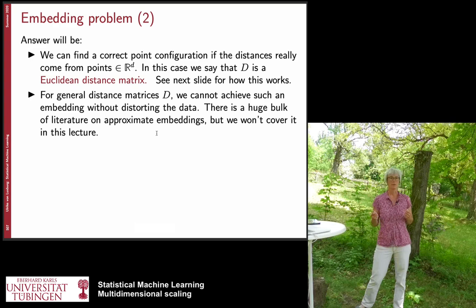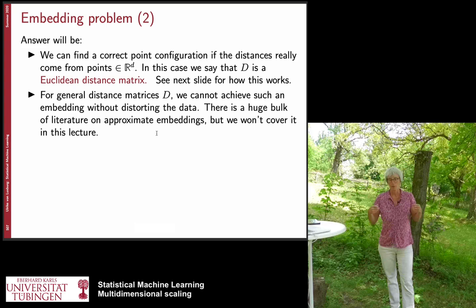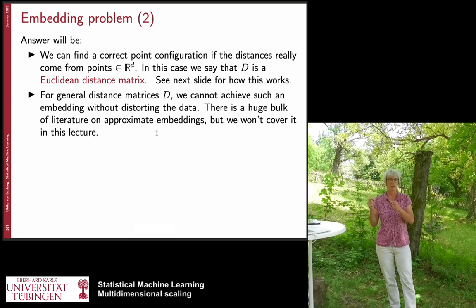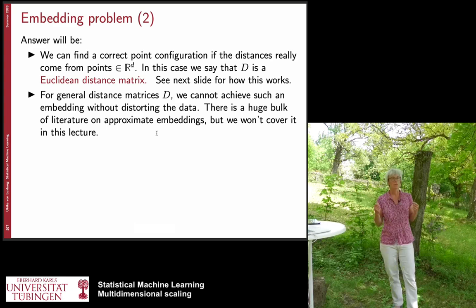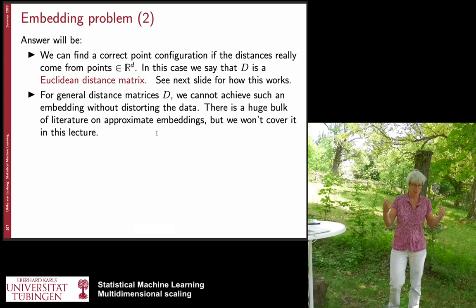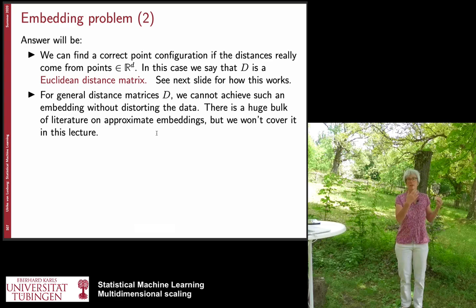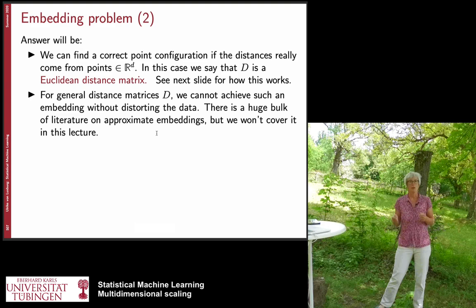Here are two answers. The first is: if we want to find an embedding such that the distances of the embedded points exactly coincide with the given distances, this is only going to work if the data points come from a Euclidean space. A Euclidean distance function has very strong properties, and an arbitrary distance function between molecules would typically not have all these properties. What might be possible is that we can approximate these distance functions by points in a Euclidean space, but we cannot recover them exactly.